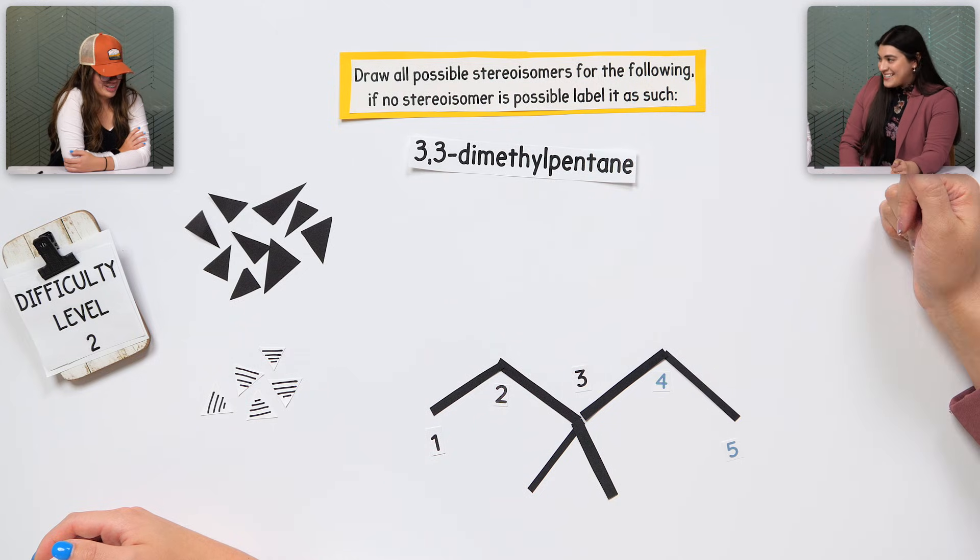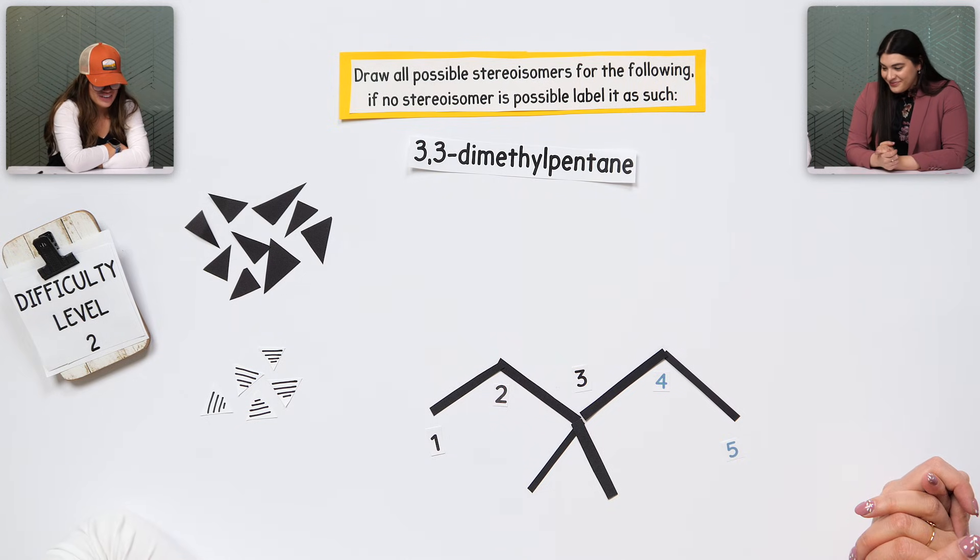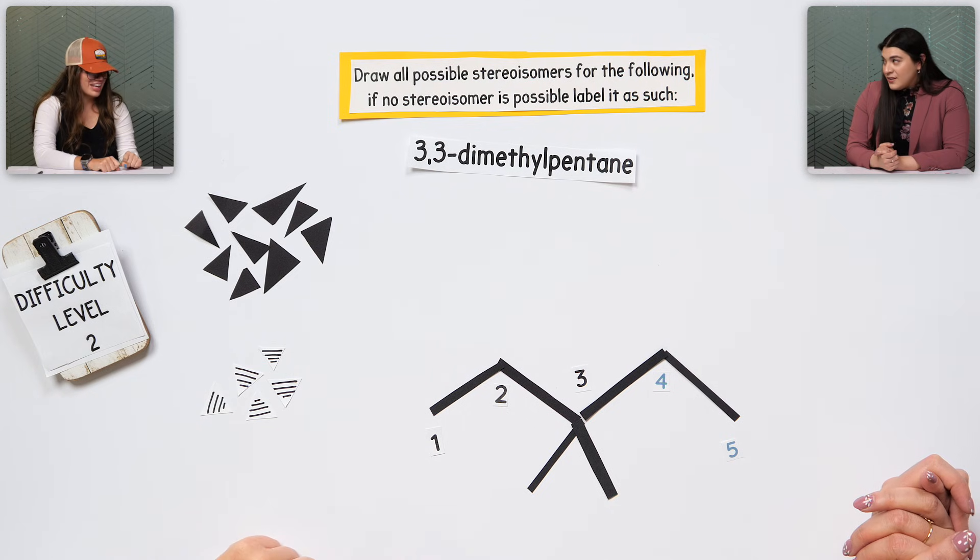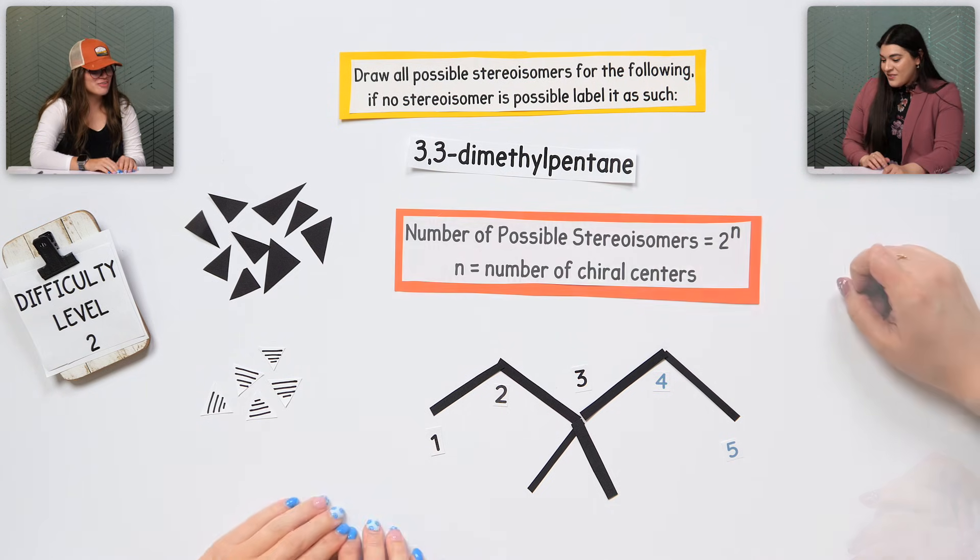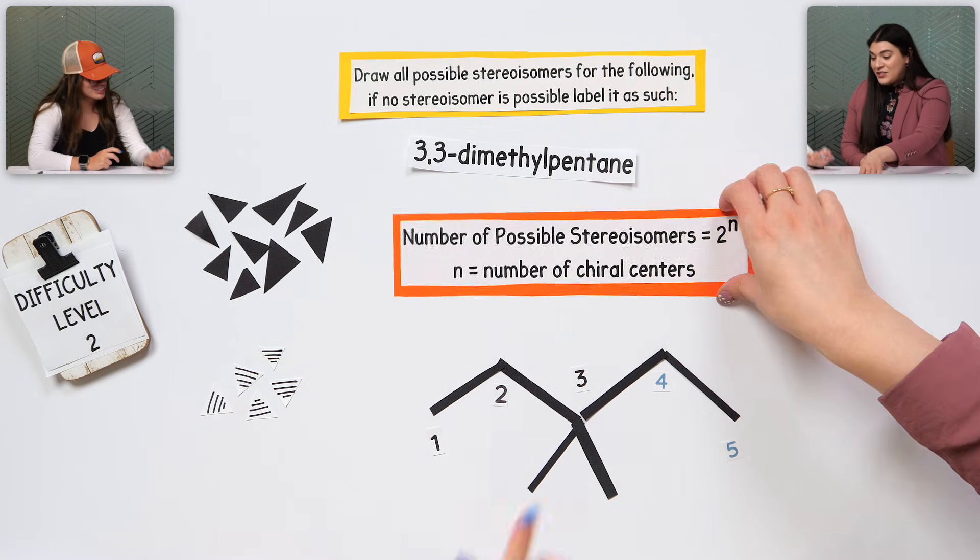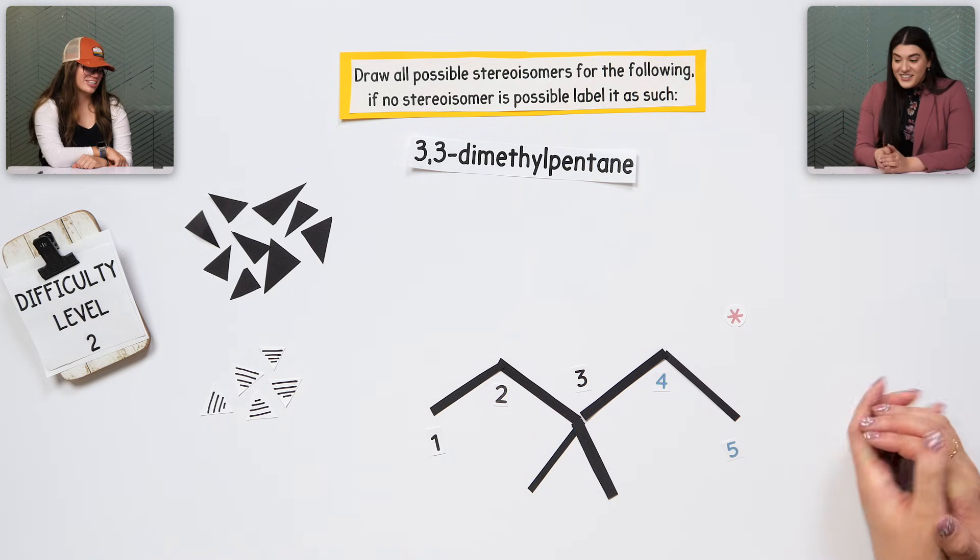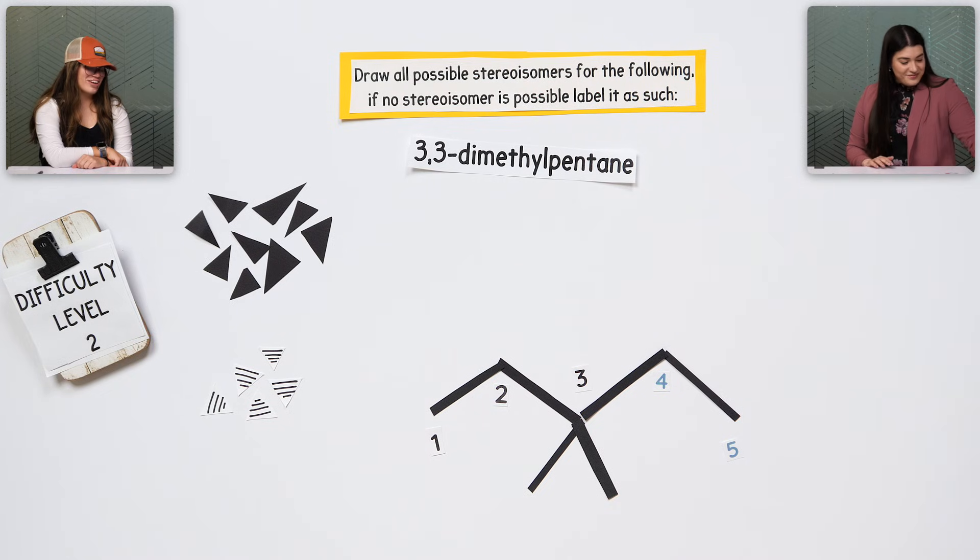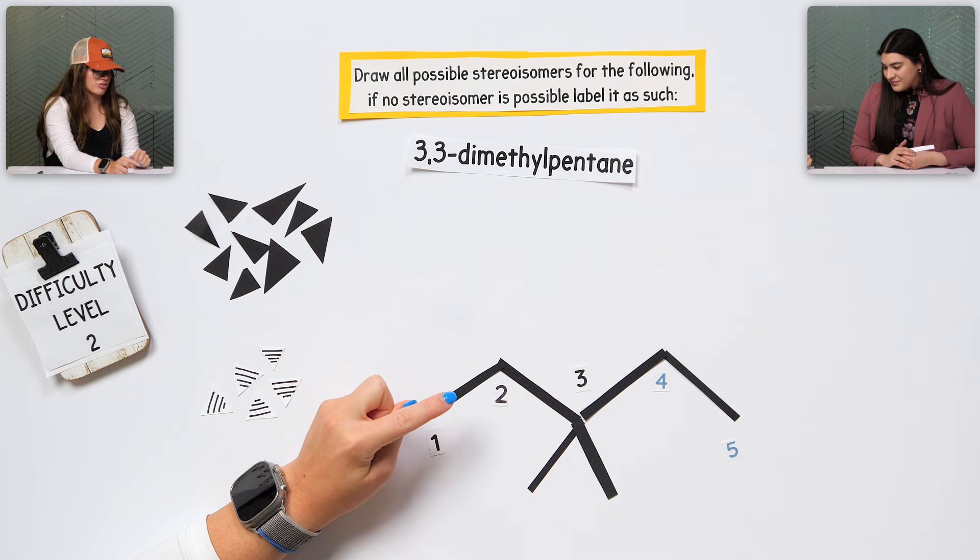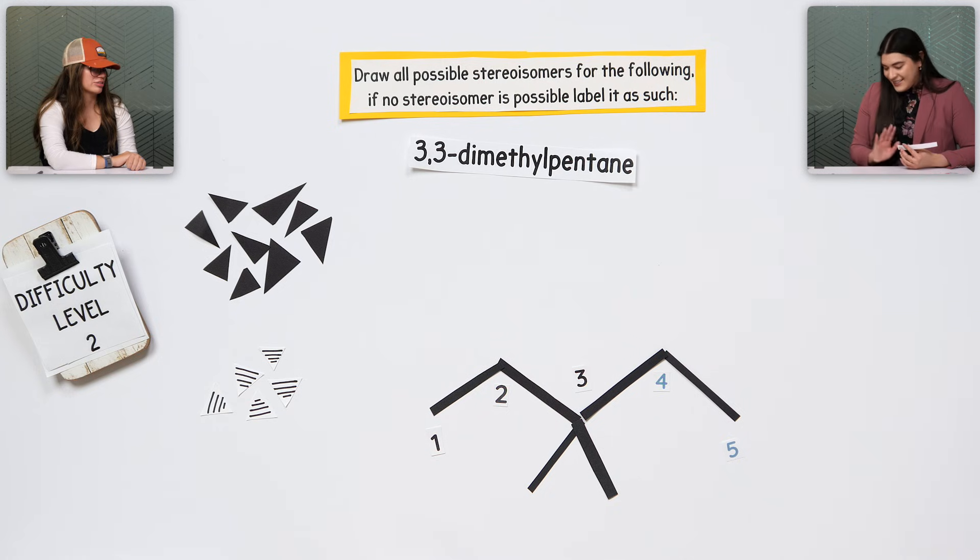What's this question asking? Draw the possible stereoisomers for the following. So it's the same thing where you use the N, two to the N. What's N? Number of chiral centers. So, it'll only be one. So, it's two. There's two possibilities, right? Describe a chiral center. And point to where that is. Is there none? Good. Why?